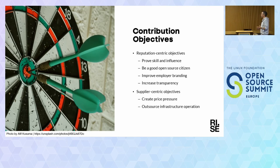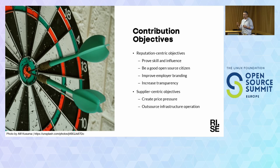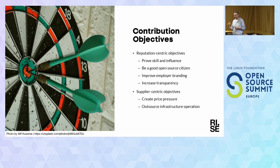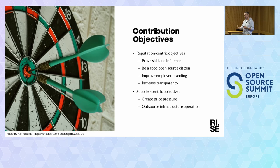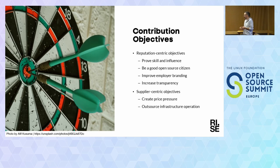Just to walk you through a bit: we have about 12 contribution objectives. One category is the more reputation-centric objectives, highlighting how it may be important to build and improve your relation with external stakeholders — one way being engaging in key technologies, key communities, proving skill and influence that you can influence this technology, and thereby working positively towards your customer base or your partner ecosystem.